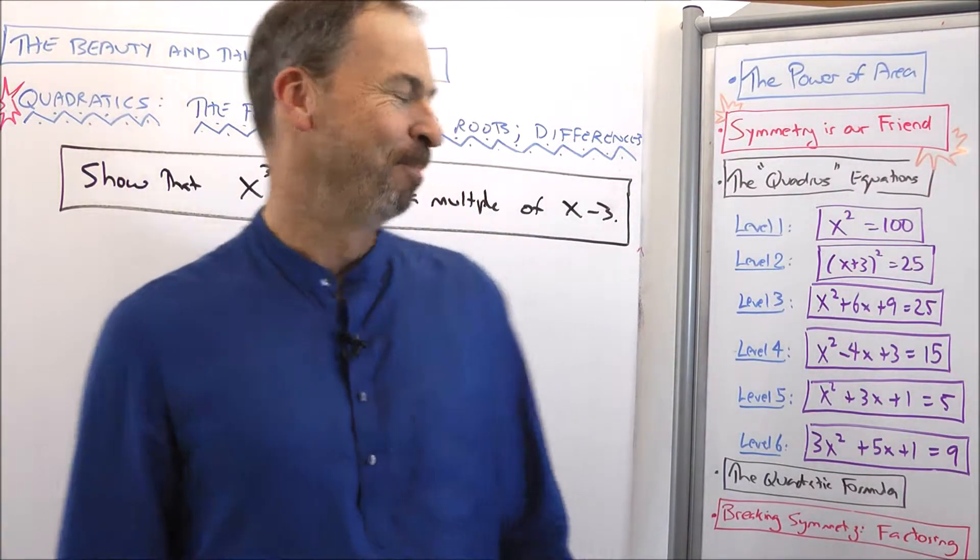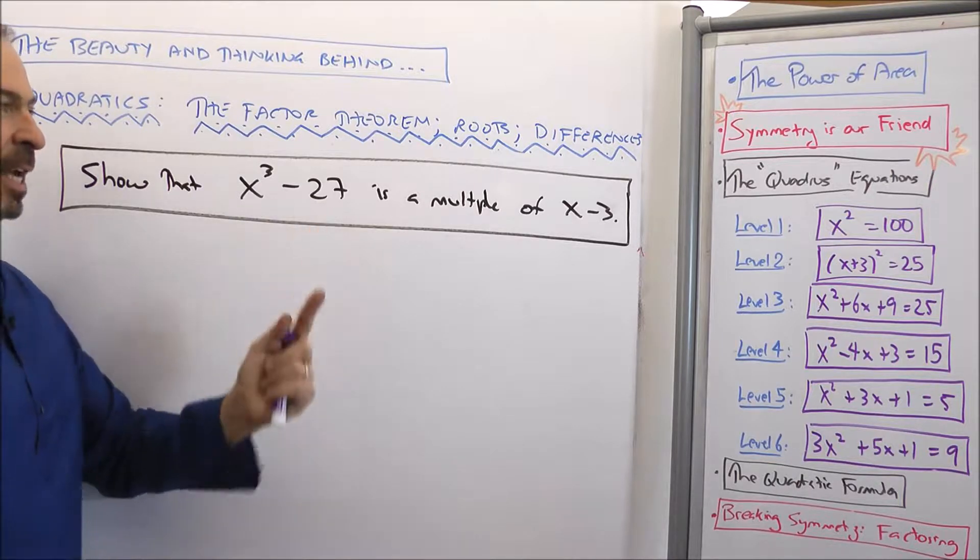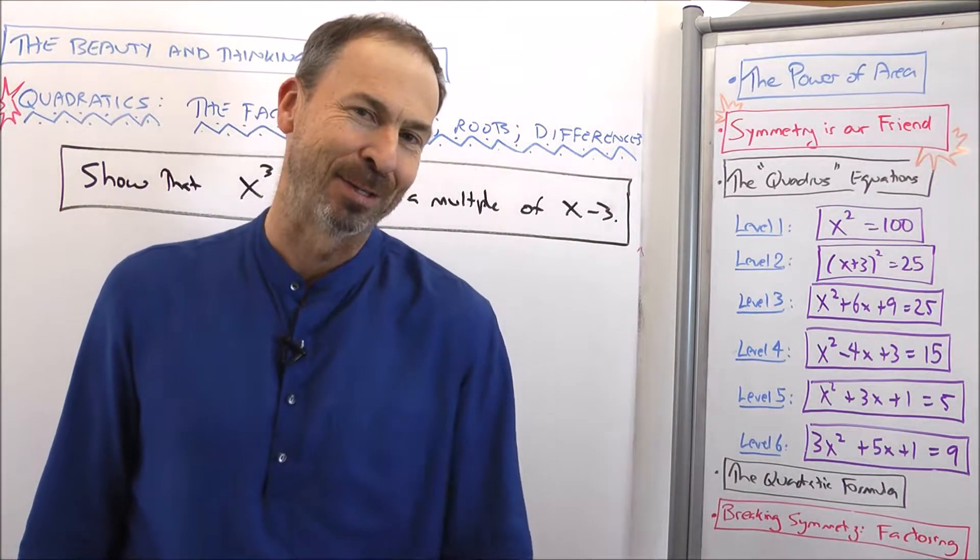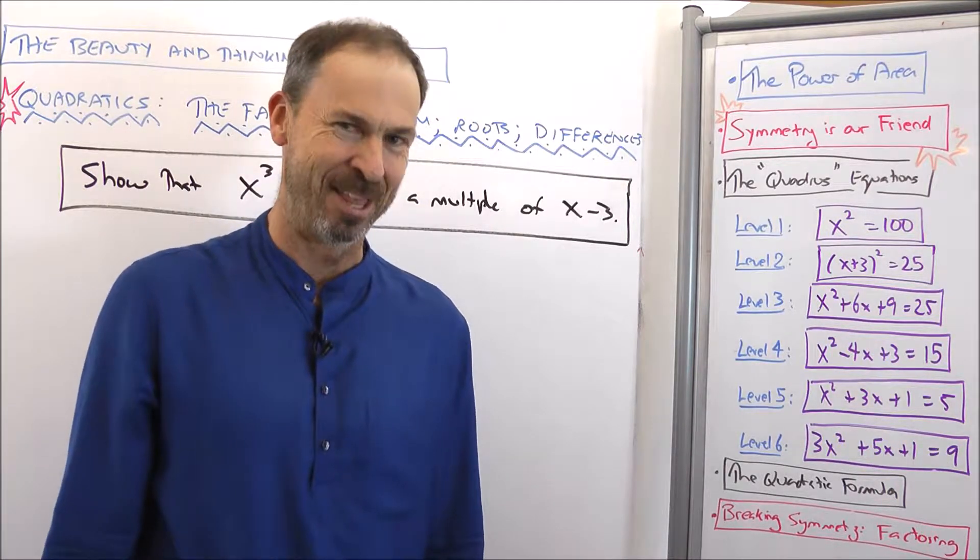Alright, here's a question. Convince me that x³ minus 27 is actually a multiple of x minus 3. How would you do that? Think about it, pause the video, and I'll give you my answer next.